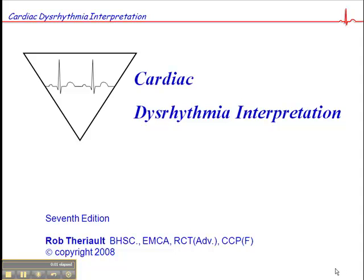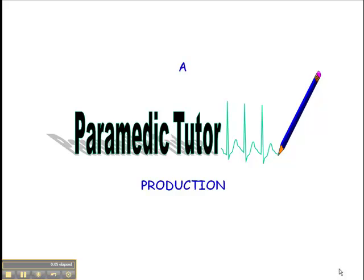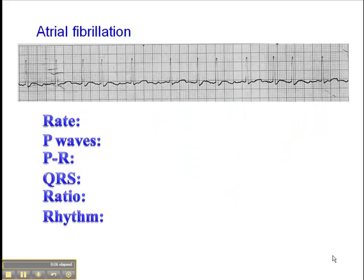Now we're on page 63 of your cardiac dysrhythmia interpretation workbook, and I'm going to talk about atrial fibrillation. It's the most common dysrhythmia in the elderly population, so you'll see a lot of patients with atrial fibrillation.